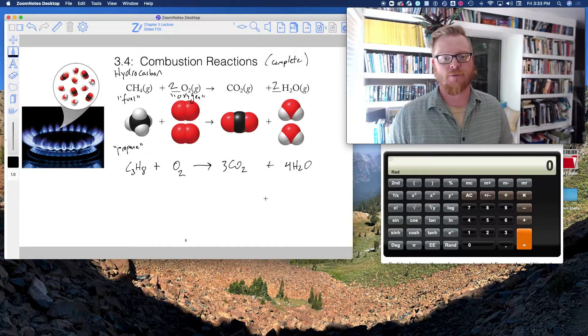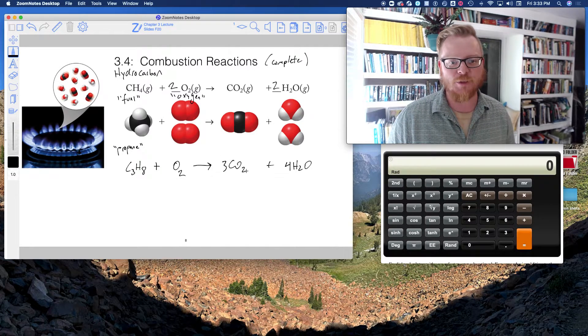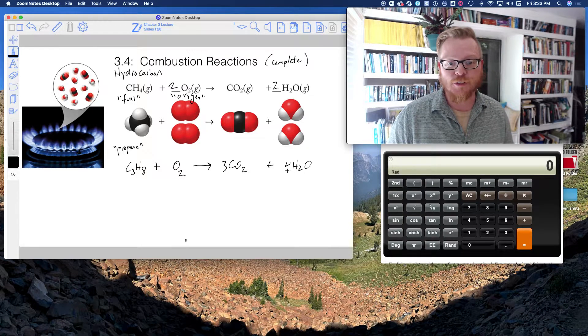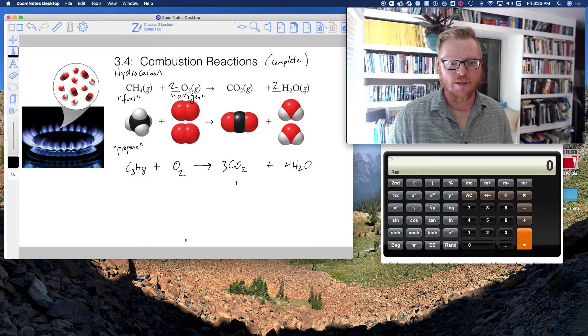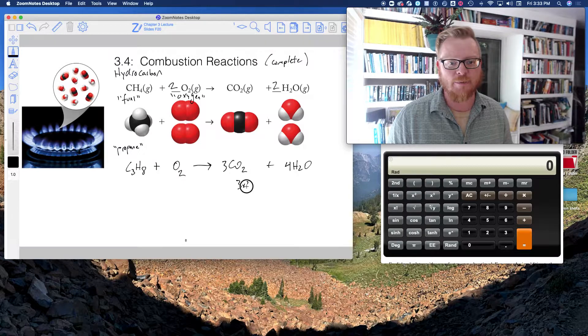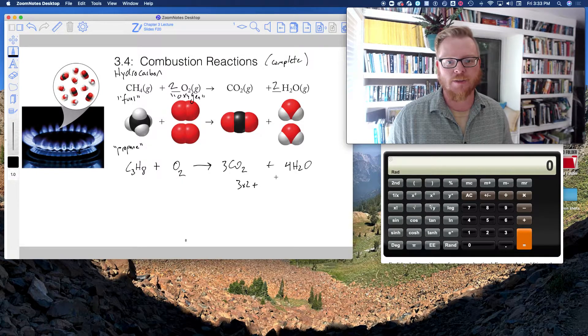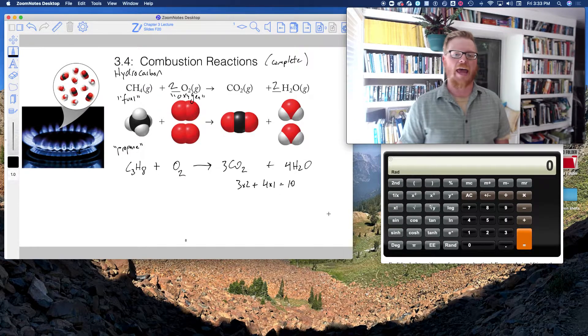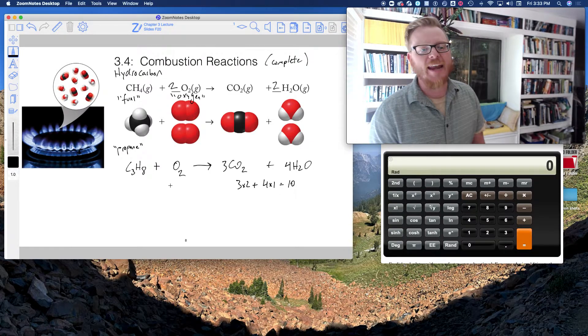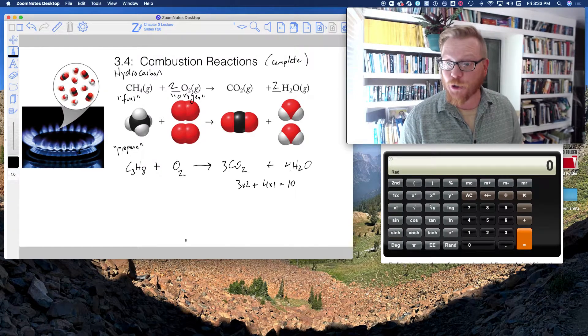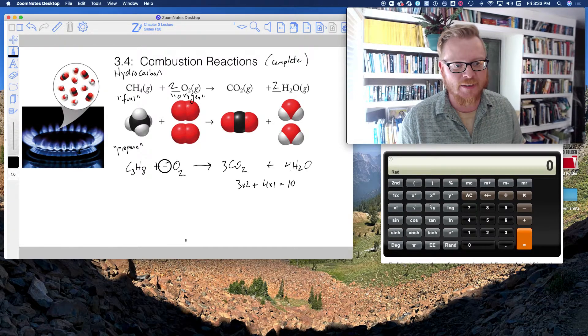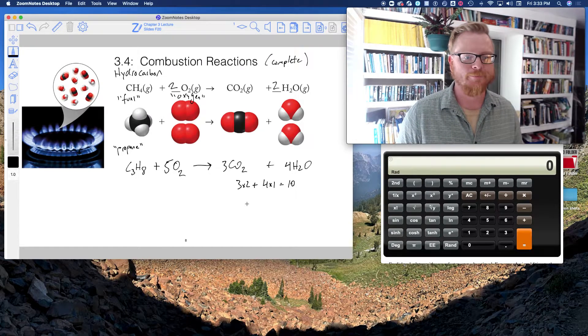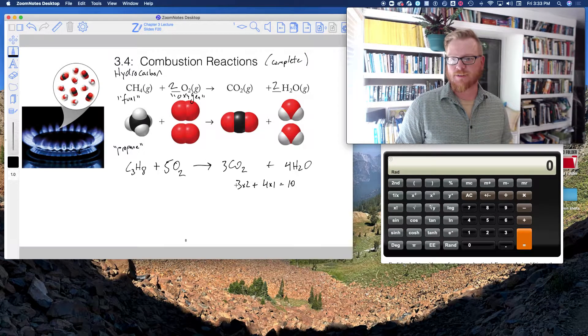Now I'm going to balance the oxygens. And I've got three times two to give me six, six plus four to give me ten. So let's write that down. Three times two plus four times one, that equals ten. And now I can see I've got O2, so to make ten of these I need five. And now that's all balanced.